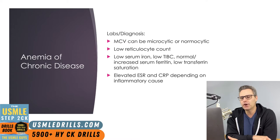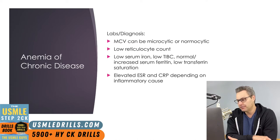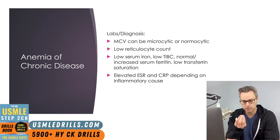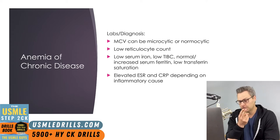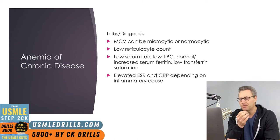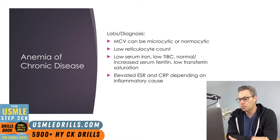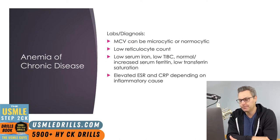Looking at the labs for anemia of chronic disease: there isn't one lab value used to make the diagnosis — unlike iron deficiency anemia, it is a diagnosis of exclusion. The MCV can be microcytic or normocytic, and there will be a low reticulocyte count. Iron studies show low serum iron and low TIBC. However, serum ferritin will be normal or increased, because iron is sequestered within macrophages. It should not be low like in iron deficiency anemia. Low transferrin saturation is also present.